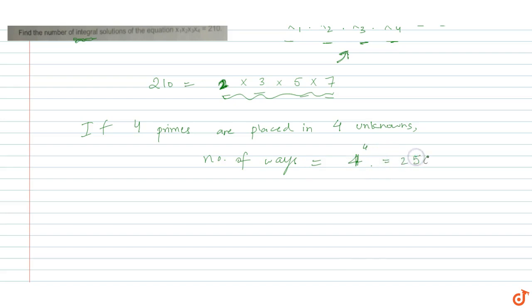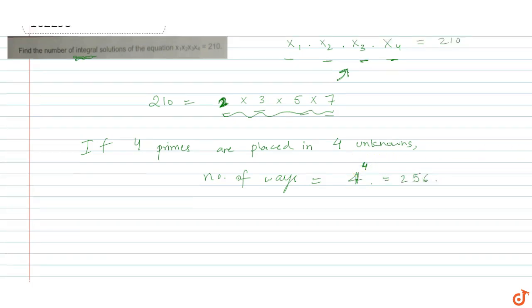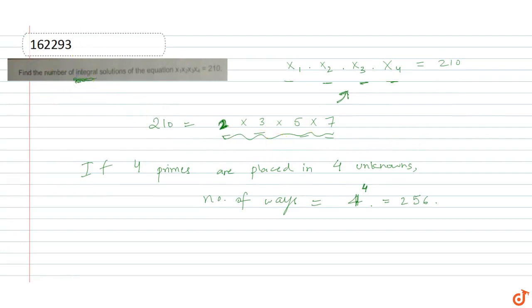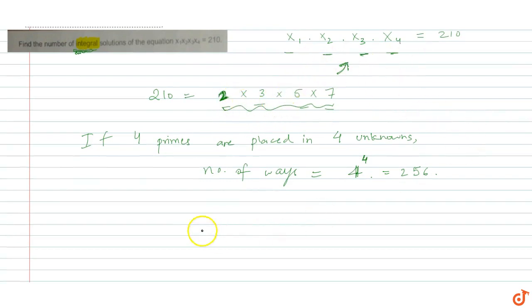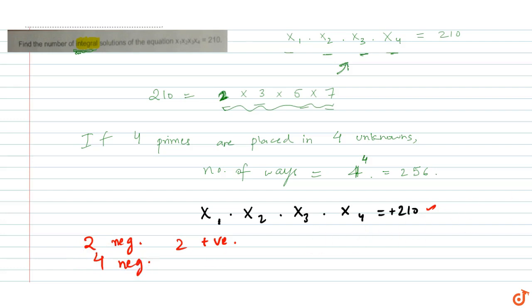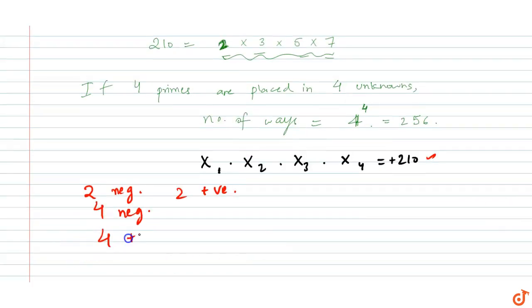But these are only the positive solutions. We need to also consider the negative parts. For this solution to exist, x1 × x2 × x3 × x4 = positive 210, when will this multiplication of four numbers be positive? Either two negatives and two positives, so the product will be positive, or either all four negatives, or all four positives.